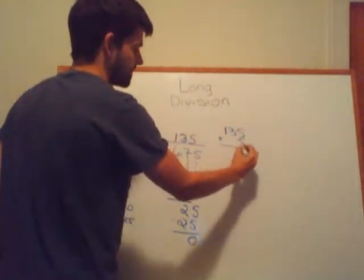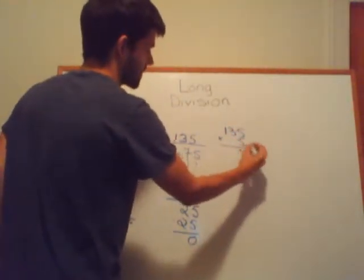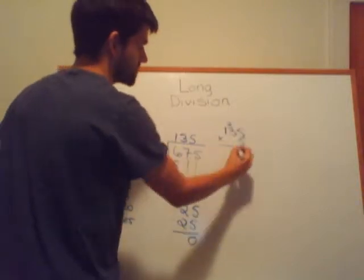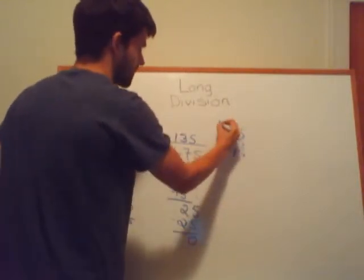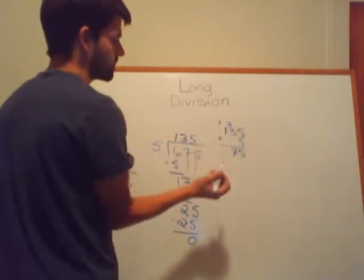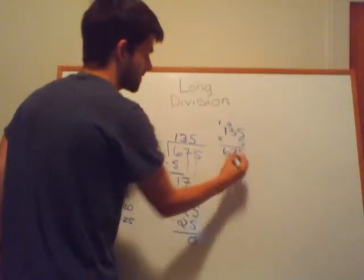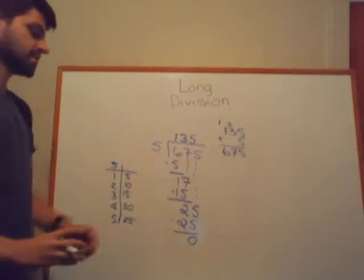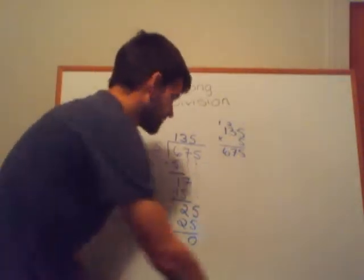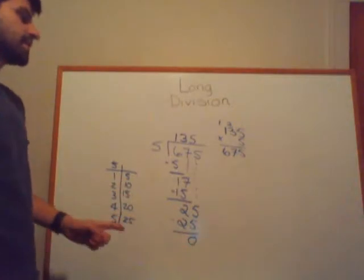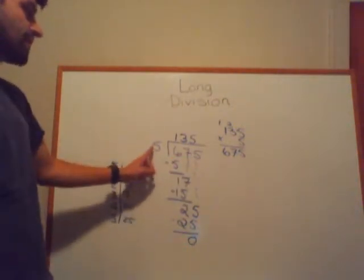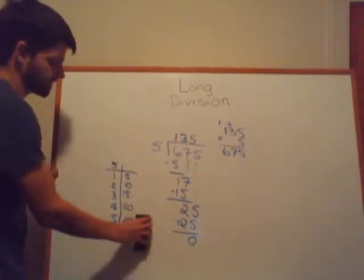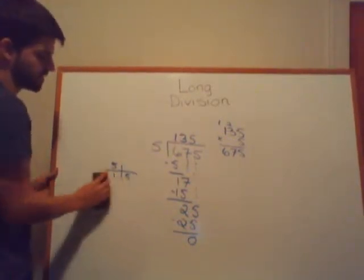So 5×5=25, carry the 2. 3×5=15, plus the 2 carried is 17, carry the 1. 1×5=5, plus the 1 carried is 6. That gives us 675 — it matches! So 675 divided by 5 is 135.